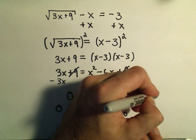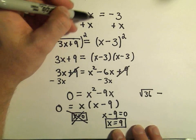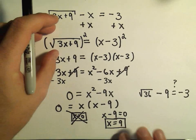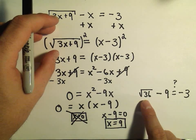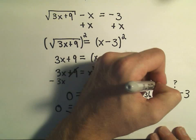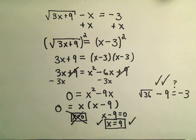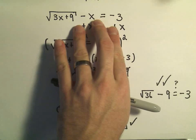So then we would have the square root of 36 minus 9 and we're asking ourselves does that give us negative 3? Well the square root of 36 is 6. 6 minus 9 does equal negative 3. Yeah that all works so x equals 9 is a solution to our original equation involving the radical.